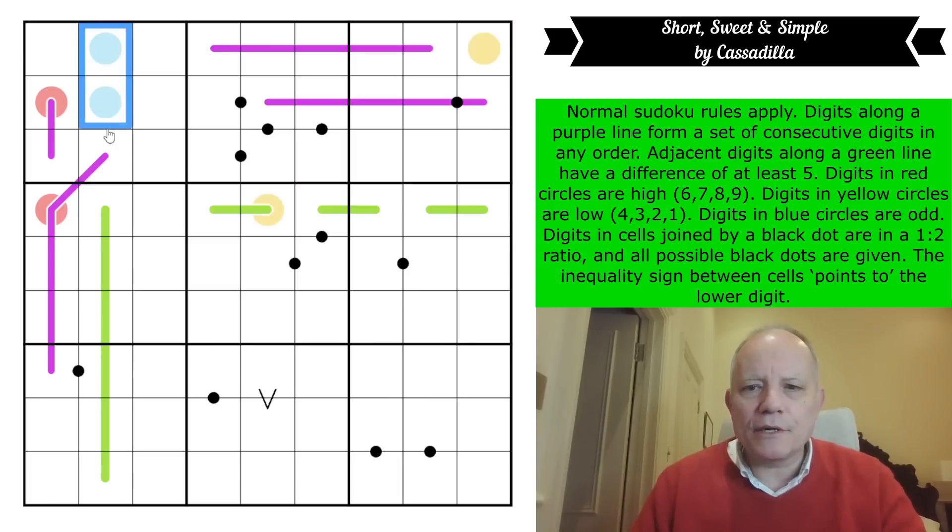Digits in blue circles are odd. Digits in cells joined by a black dot, this is Kropke, have a one to two ratio. And all possible black dots are given. So there's a big old negative constraint on the black dots. The inequality sign between cells points to the lower digit. So it's as you'd expect, that is greater than that.